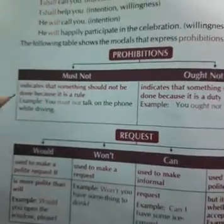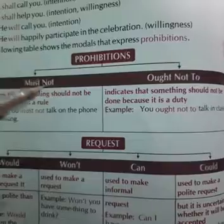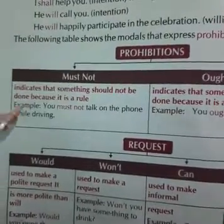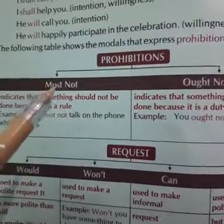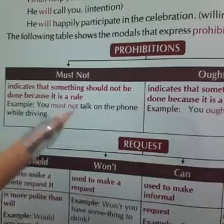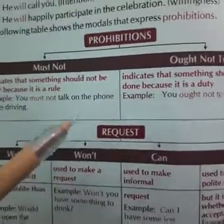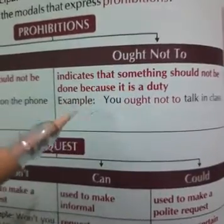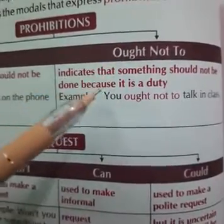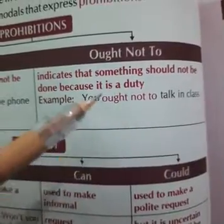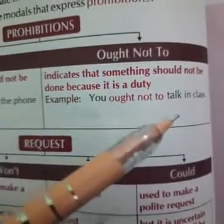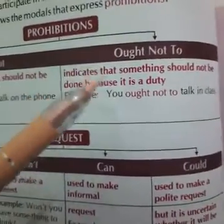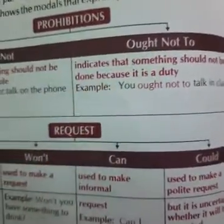Next are prohibitions. Must not and ought not to are used to express prohibitions. Must not indicates that something should not be done because it is a rule: 'You must not talk on the phone while driving, because it's a rule.' Ought not to indicates that something should not be done because it is a duty or moral obligation: 'You ought not to talk in the class — it's your duty.' When it comes to a rule, we use must not; when we talk about duties, we use ought not to.